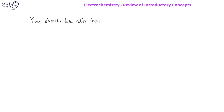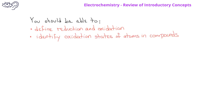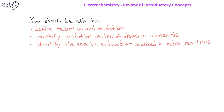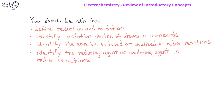By now, you should be able to define oxidation and reduction. You should be able to identify oxidation states of atoms in a compound. You should also be able to identify what is oxidized or reduced in a redox reaction. And finally, you should be able to identify reducing agents or oxidizing agents in a given redox reaction.